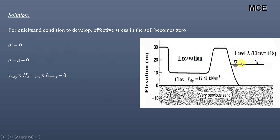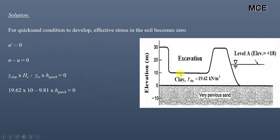Pore water pressure equals unit weight of water multiplied by the head of water that will cause the quicksand condition. The present head is 18 meters, but we need to find the head that will cause quicksand to develop. The unit weight of clay for Part A is 19.62 kN/m³, the height of clay is 10 meters — the contractor has removed 20 meters of clay, leaving only 10 meters. Unit weight of water is 9.81 kN/m³.